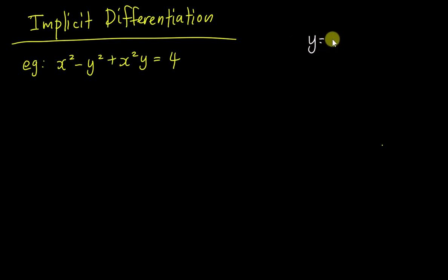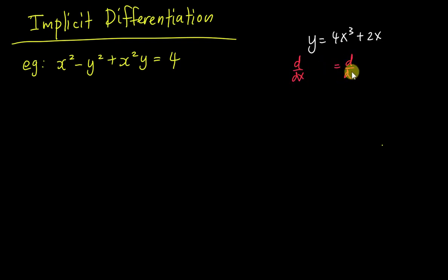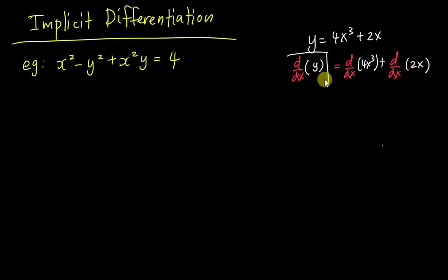Normally if you have an equation like y equals 4x cubed plus 2x, it's quite easy to find dy/dx directly. The concept is that when we do dy/dx, we actually apply d/dx to every single term — we differentiate with respect to x for y, for 4x cubed, and for 2x. Because everything is in terms of x, you can just apply your differentiation skills, which gives you 12x squared plus 2.